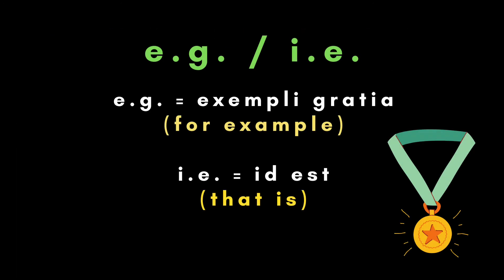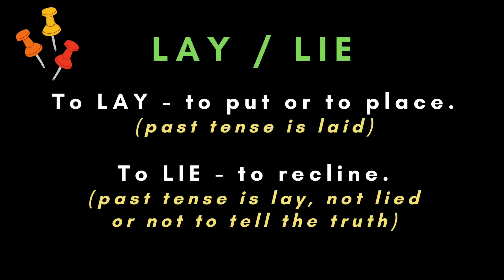These two Latin abbreviations are often mixed up: "e.g.," or exempli gratia, means "for example," while "i.e.," or id est, means "that is." Next: "lay" and "lie." "To lay" means to put or to place; the past tense of lay is "laid." "To lie" means to recline; the past tense of lie is "lay," not "lied," which is the past tense of "lie" meaning not to tell the truth.